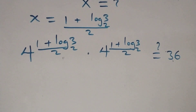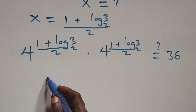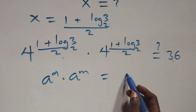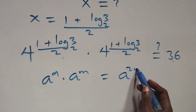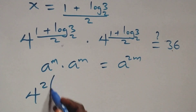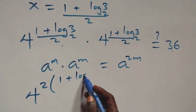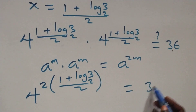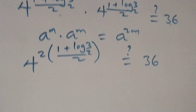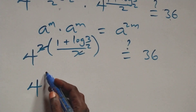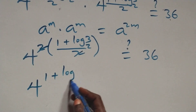Here we have the same base multiplying. We have the expression raised to power 1 times the same power, which can be written as raised to power 1 plus 2 — that is 2x. This becomes 4 raised to power 2 times (1 plus log₂3) all over 2, equals 36. The 2s cancel, giving 4 raised to power (1 plus log₂3) equals 36.